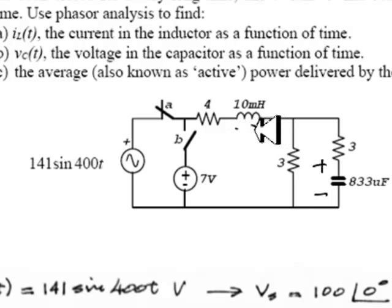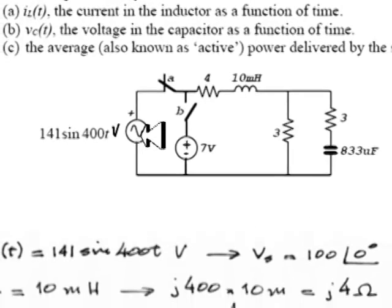So let's begin. Because we will be using phasor analysis and the source which is given by this function of time as 141 sin 400t volts is going to be represented by a phasor.